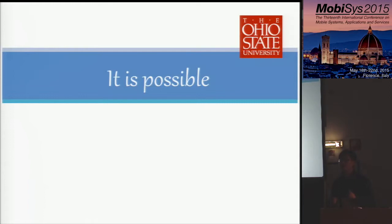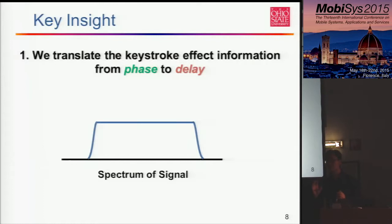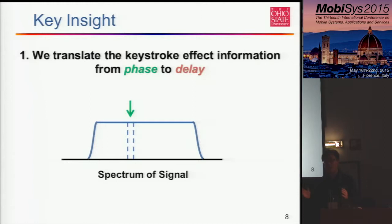For how we realize this, we have two key insights. First, we are not looking at phase information alone. Instead, we translate the phase to the delay. The difference is that phase only works on one subcarrier — phase is different across different subcarriers. When we have a wideband signal like Wi-Fi spanning a wide band, using only one subcarrier wastes a lot of information. When we map the keystrokes to a delay, and we know that from the delay we can calculate the phase information across all our bands, tracking the delay means we can utilize the whole band's phase information for the calculation.